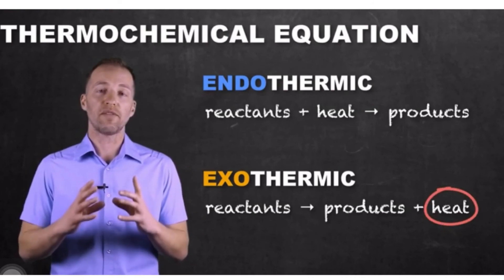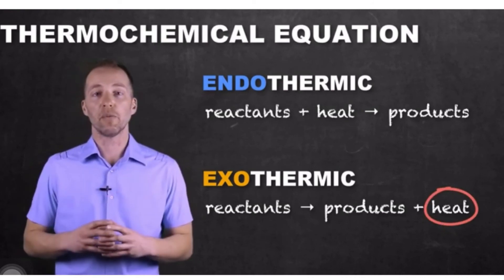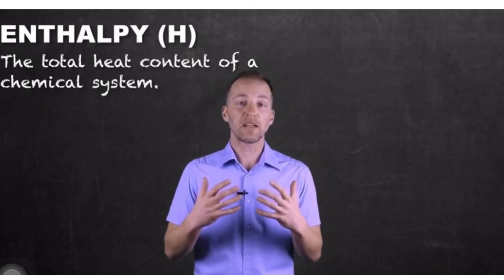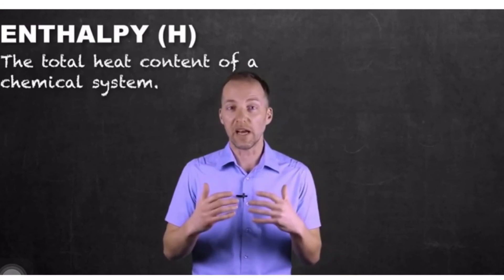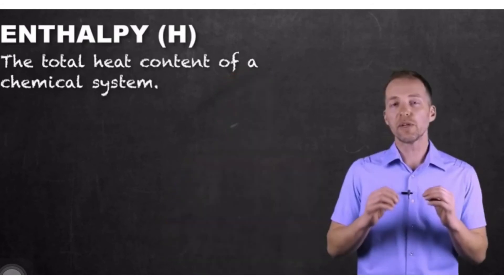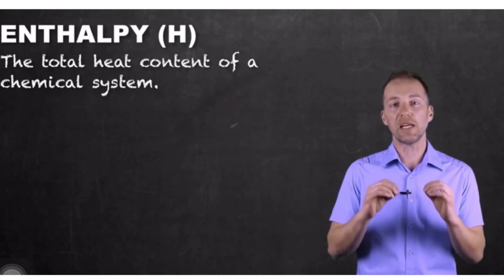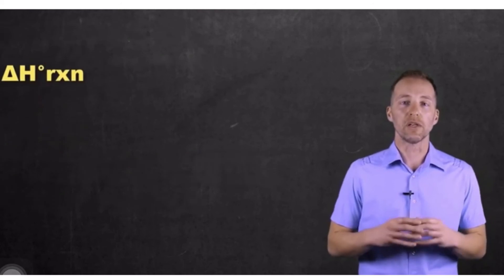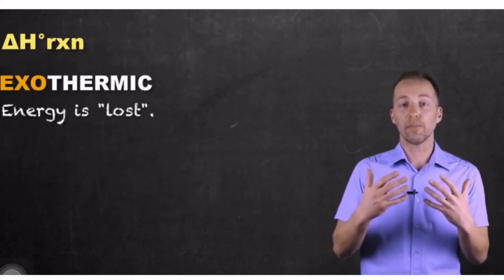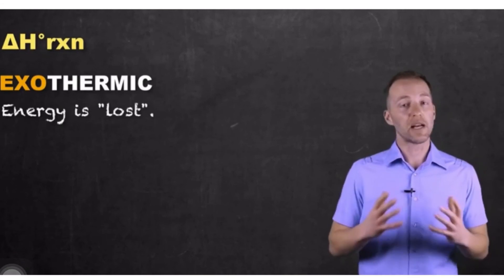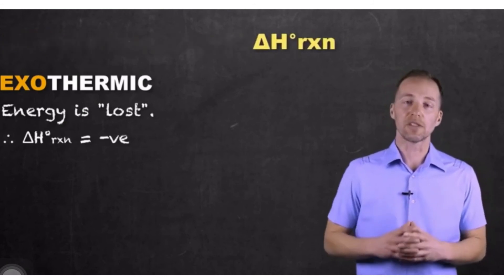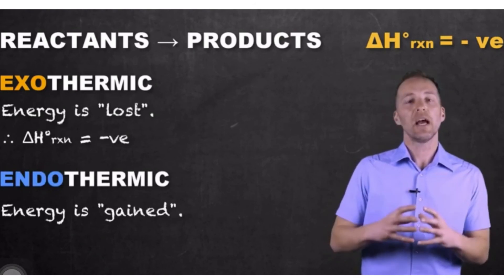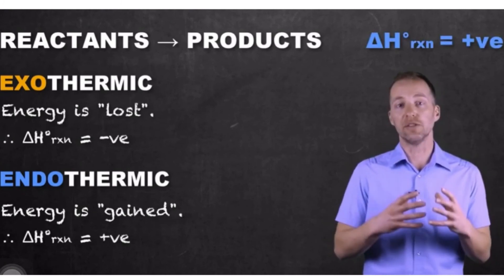Another way to represent this is to remove the energy term and treat it as something called enthalpy. Enthalpy is effectively the heat or energy required or released as a result of a chemical process. There is no absolute zero value, but we can measure the change in overall enthalpy — delta H — by figuring out how much heat is lost or gained. For exothermic reactions, delta H is negative because energy is lost to the surroundings. For endothermic reactions, delta H is positive because energy is gained by the system.